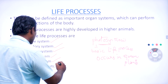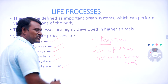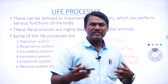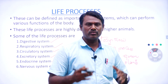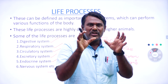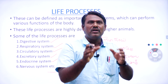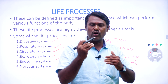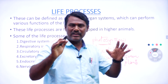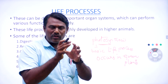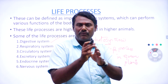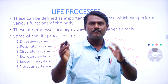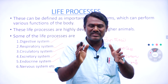And the last one is the nervous system. It includes the brain, neurons, and everything. So these are different types of organ systems which occur only in human beings. But now we are moving into the main concept, which is called photosynthesis, which occurs only in green plants.